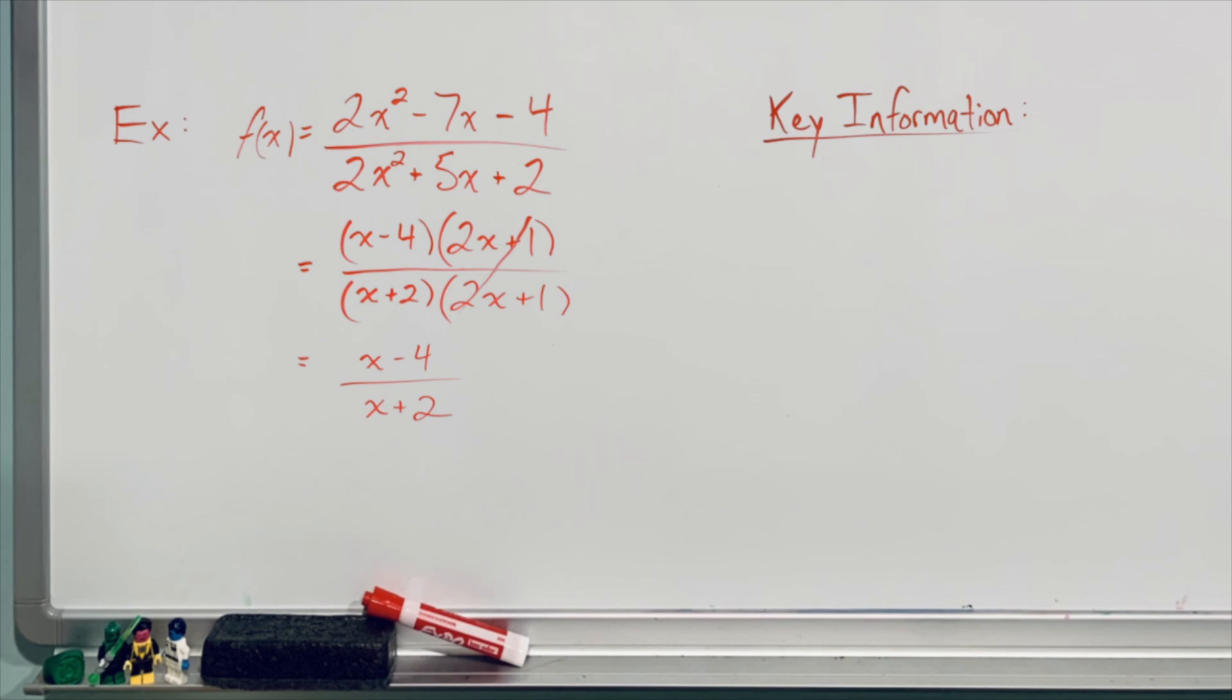Now before we cancel that 2x plus 1 binomial, it may have seemed to you that there may have been a vertical asymptote at negative a half. If I sub negative a half into 2x plus 1, I would get zero. And when we have zero in the denominator of a rational function, we have a vertical asymptote. But because we canceled that 2x plus 1 out, you actually have a hole at x equals negative a half. And we'll see that when we go to actually sketch this rational function. You can of course determine the y value for the hole just by taking negative a half and substituting it back into the simplified form of the rational function. And so as a result, we have a hole at negative a half, negative 3.